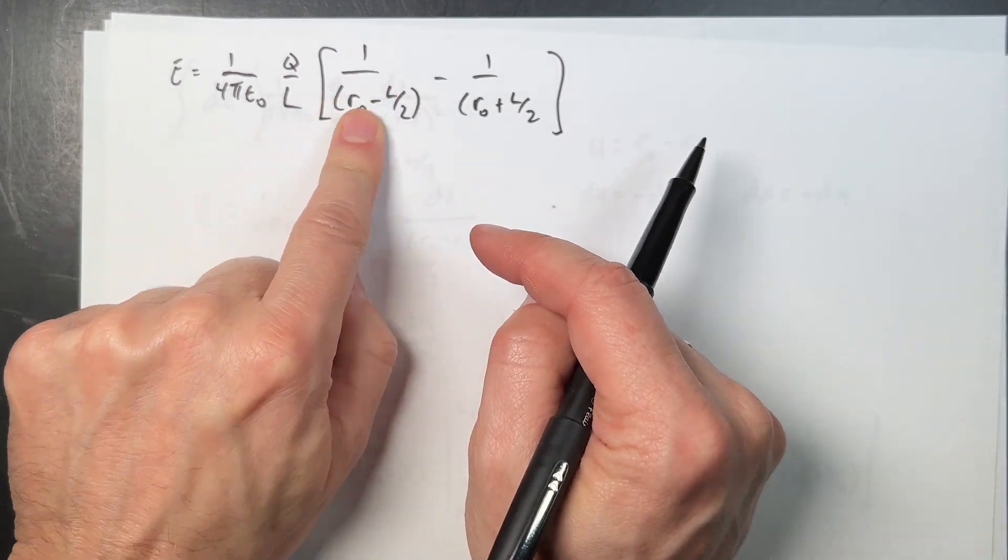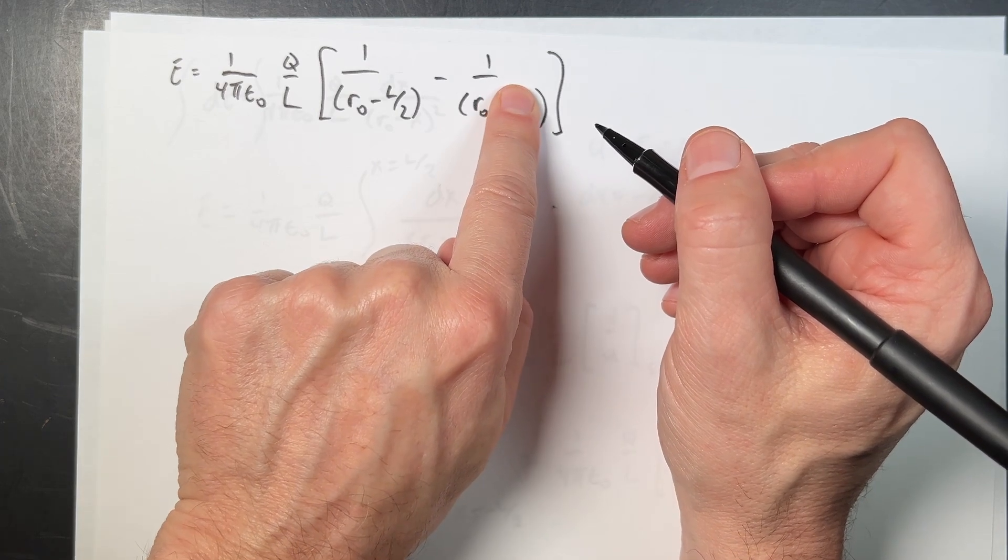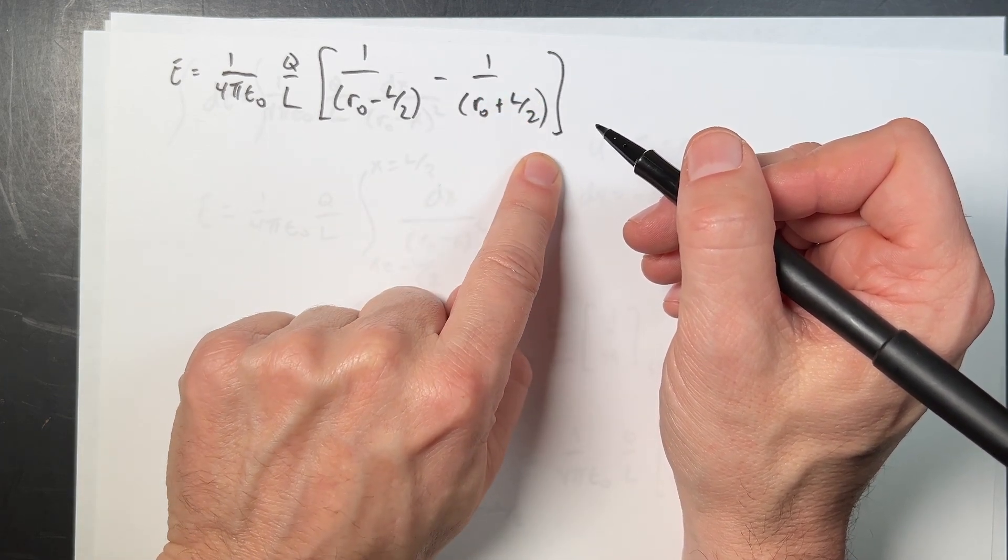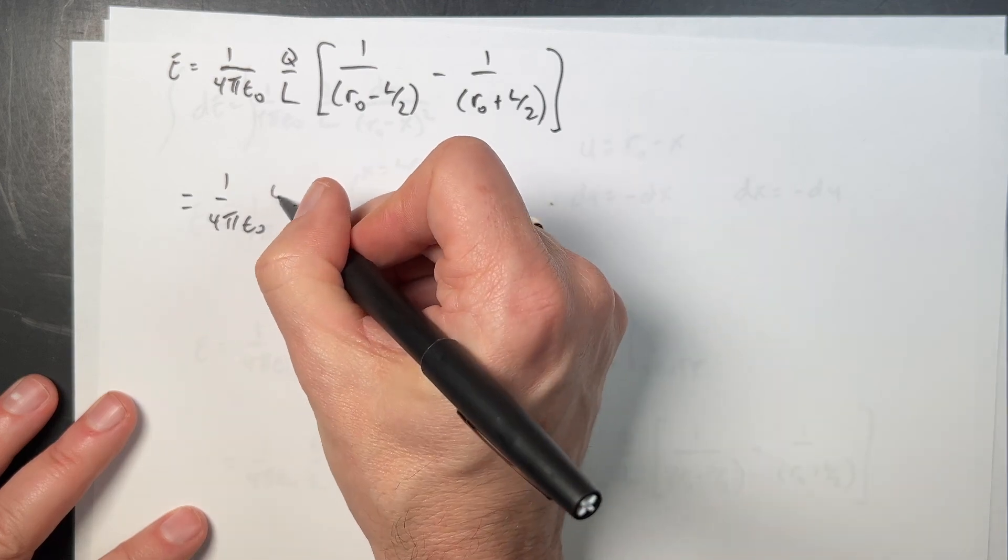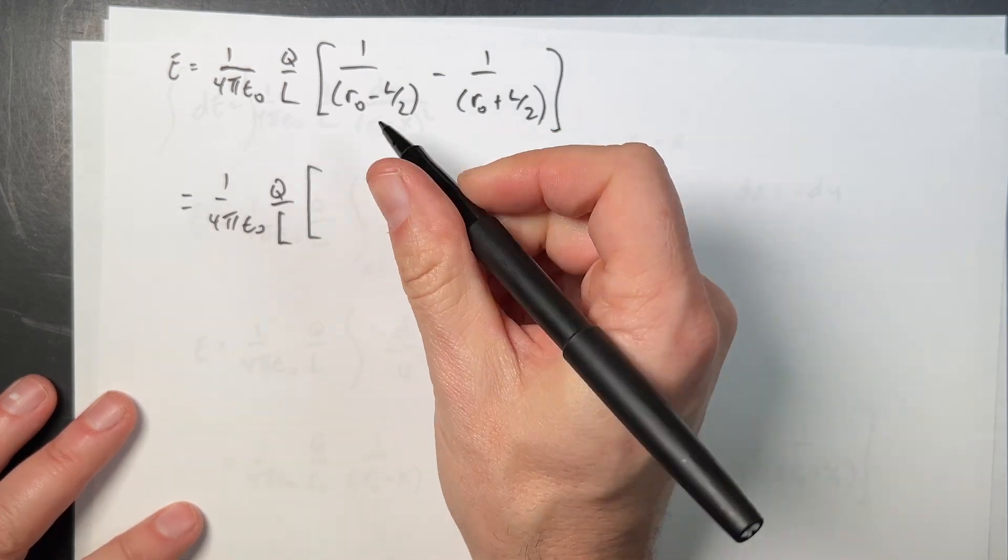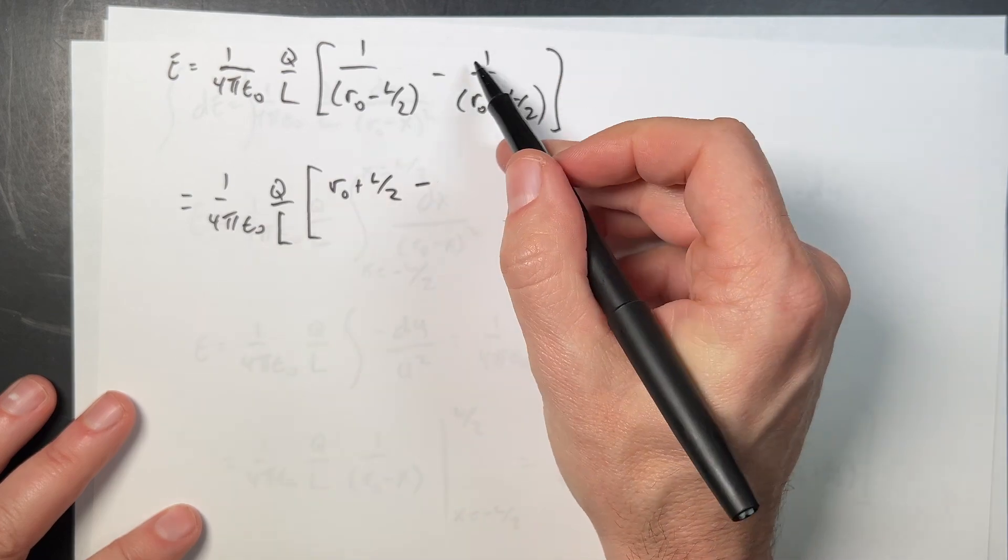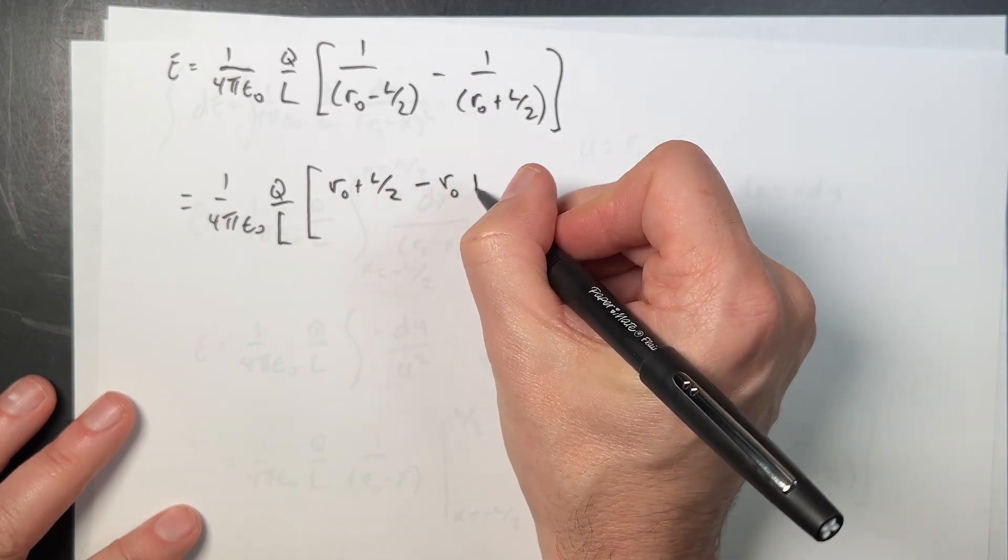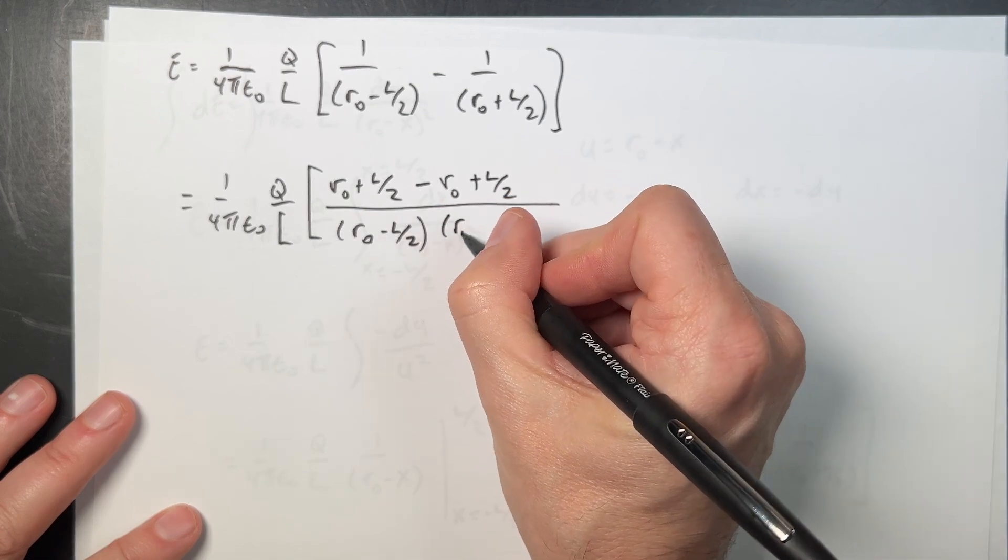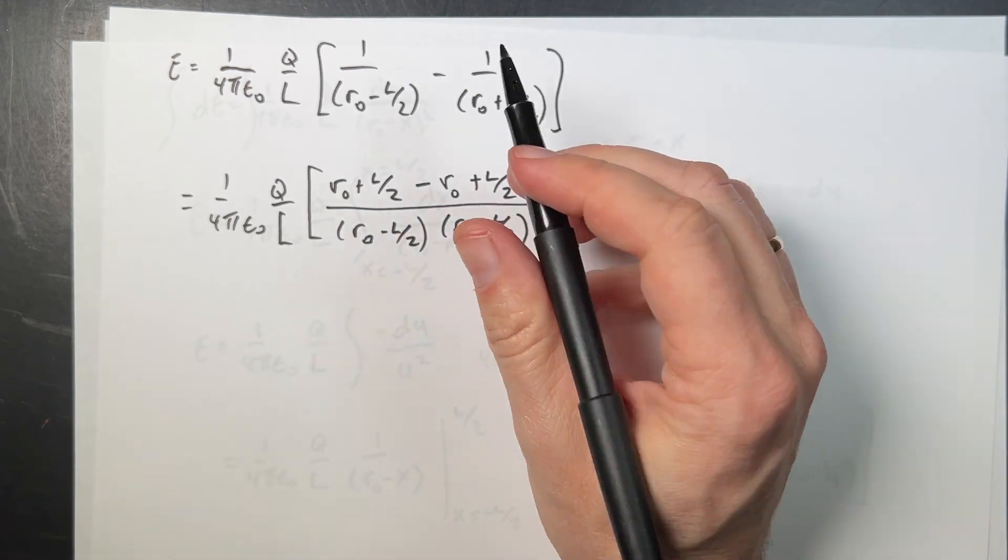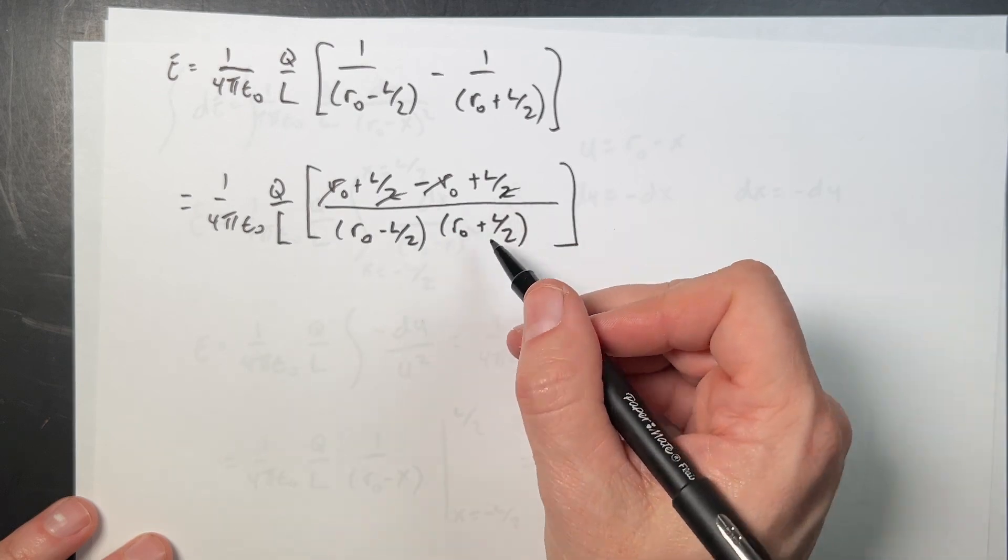So if I multiply this by r plus L over 2 over r plus L over 2, and I multiply this by r minus L over 2 over r minus L over 2, then I get a common denominator. So that's going to be 1 over 4π epsilon naught q over L. And then here I'm going to get a common denominator. The top is going to be r0 plus L over 2 minus this times that, which is minus r0 plus L over 2. And then I get r0 minus L over 2 times r0 plus L over 2. Cancel, cancel.